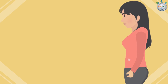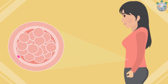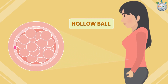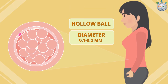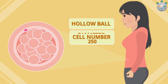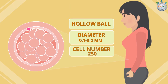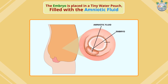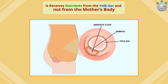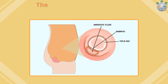At three weeks pregnant, the size of your fetus resembles a hollow ball with a diameter of 0.1 to 0.2 millimeters. The cell number will increase to 250. The embryo is placed in a tiny water pouch filled with amniotic fluid and receives nutrients from the yolk sac, not from the mother's body.